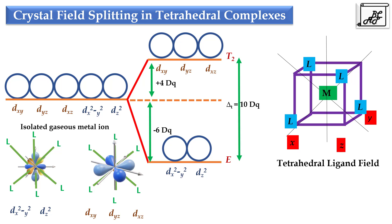This is called crystal field splitting in tetrahedral complexes. Each electron that goes into the e set of orbitals decreases the energy of the system by -6dq, and every electron that goes into the t2 set of orbitals increases the energy of the system by +4dq. In octahedral complexes there are 6 ligands, whereas in tetrahedral complexes there are only 4 ligands. Hence the field produced by the 4 ligands is always weak, and the strong ligand field is not considered in case of tetrahedral complexes.